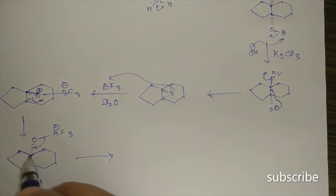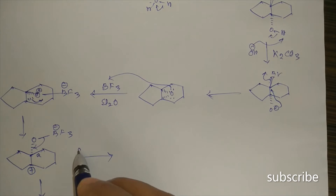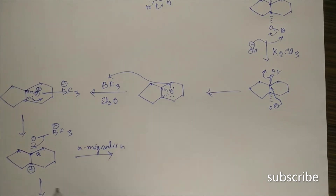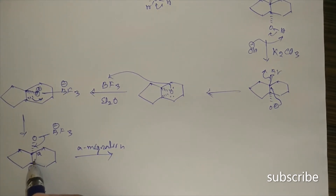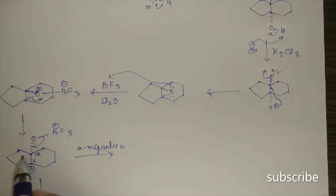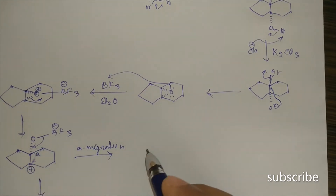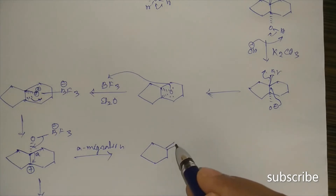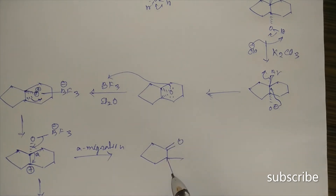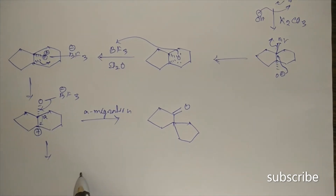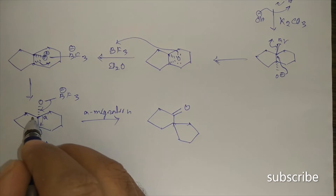If 'a' migration takes place, this bond migrates to the carbocation carbon, converting the six-membered ring into a five-membered ring — a five-membered ring with a keto group is formed. Another five-membered ring is also formed adjacent to it.